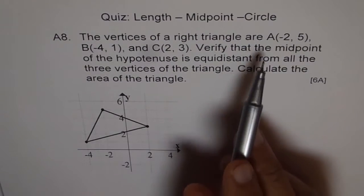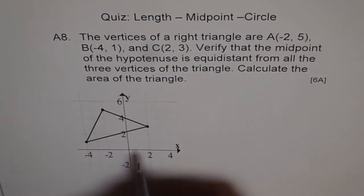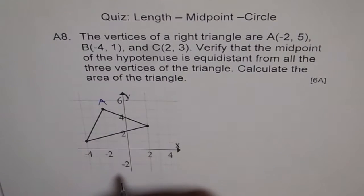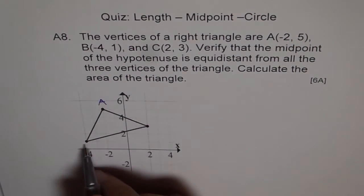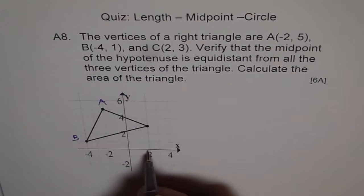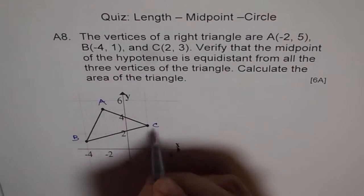Let us write down what is A. A is (-2,5), so that is our A. B is (-4,1), so this is B. And C is (2,3), so that is C for us.